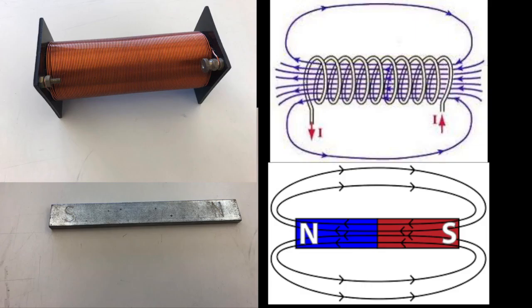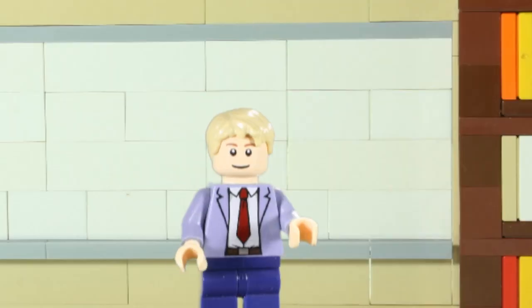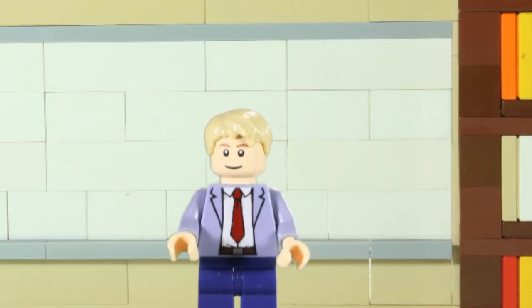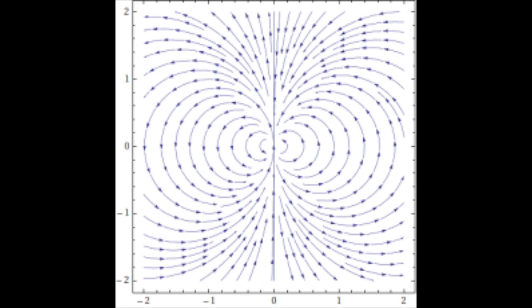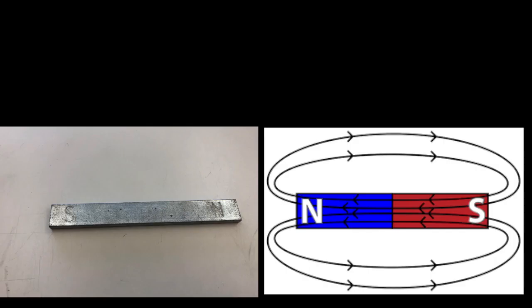The magnetic field of a solenoid looks just like the magnetic field of a bar magnet. There is one very important difference between the two. The magnetic field is strongest where the field lines are dense. In a bar magnet, that happens inside the bar where we cannot access it.